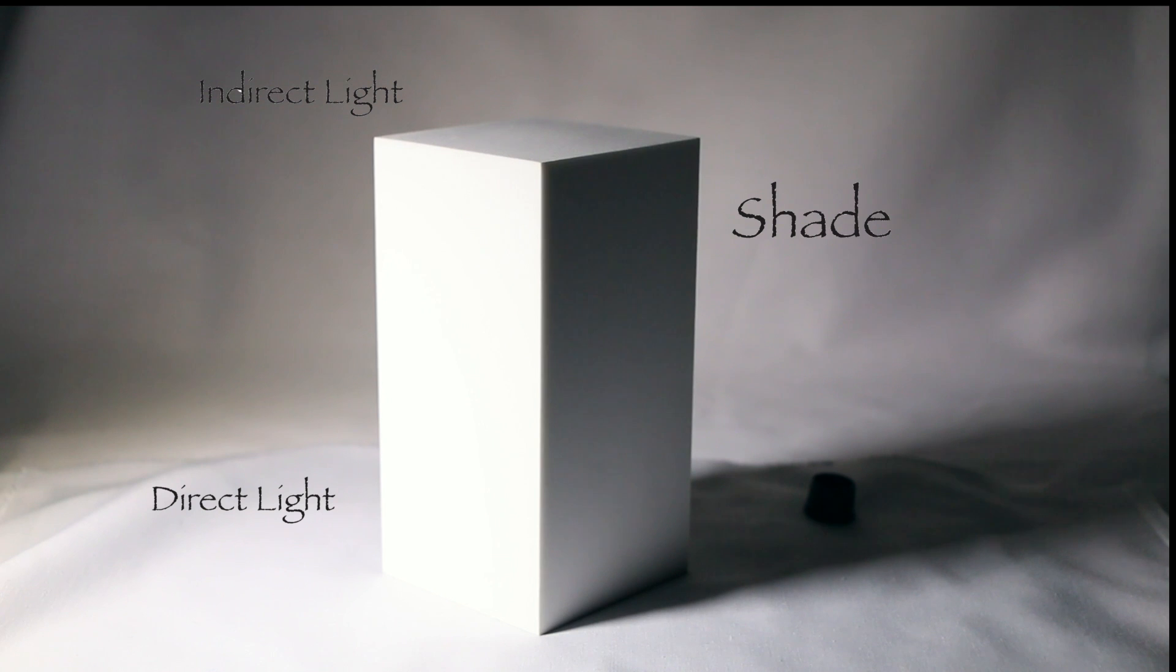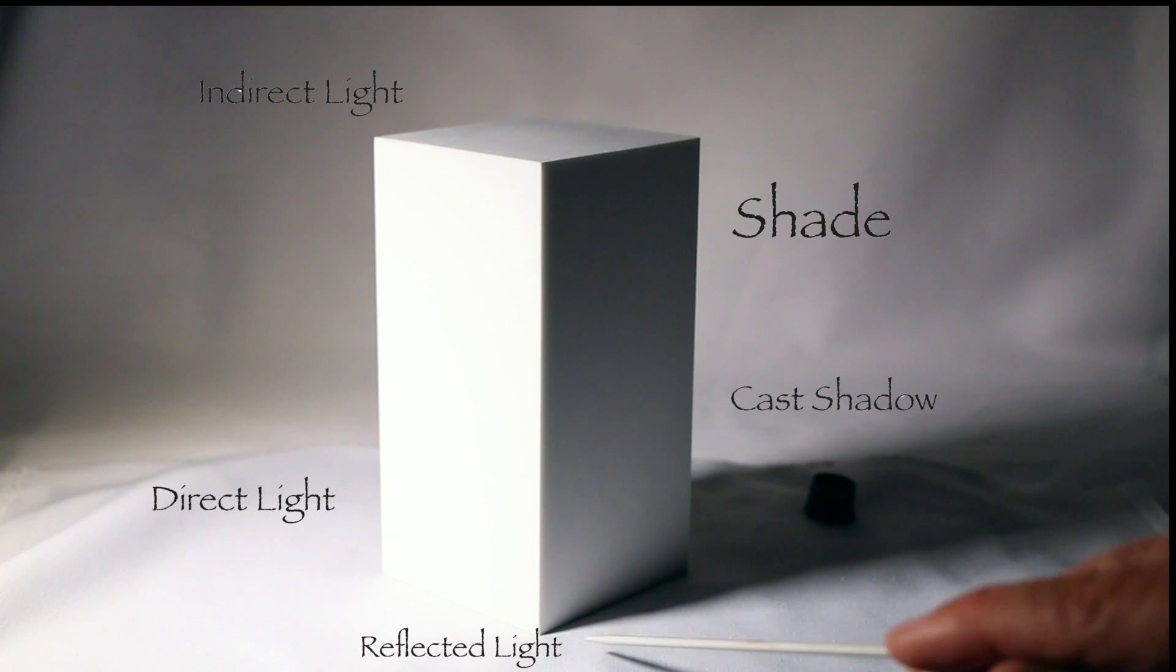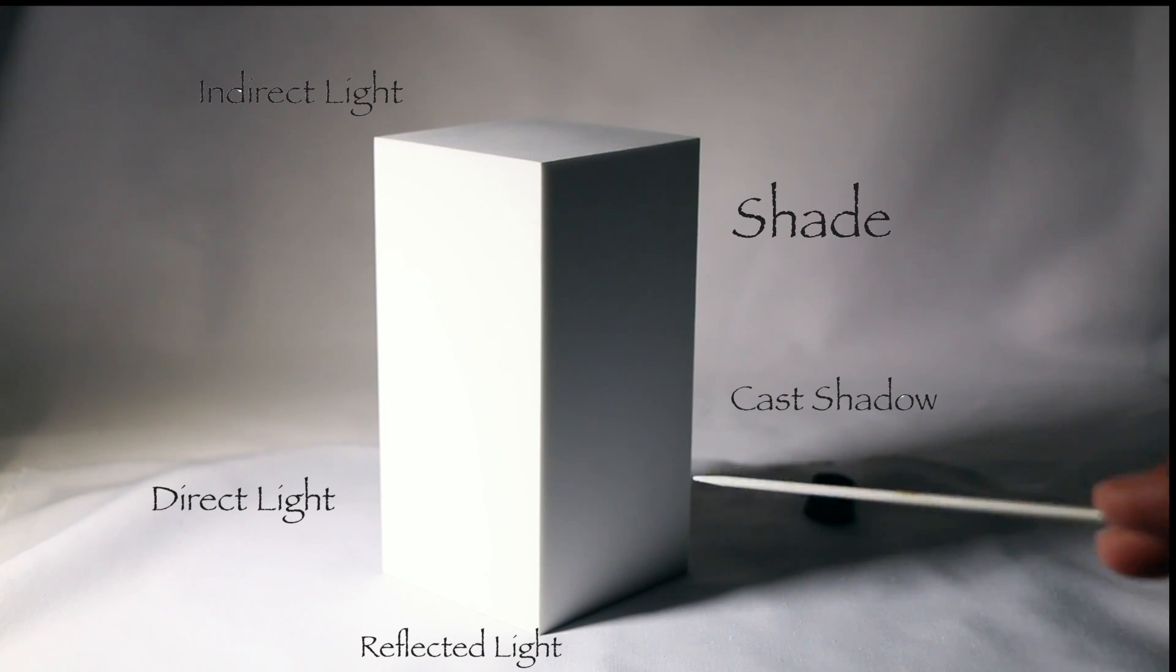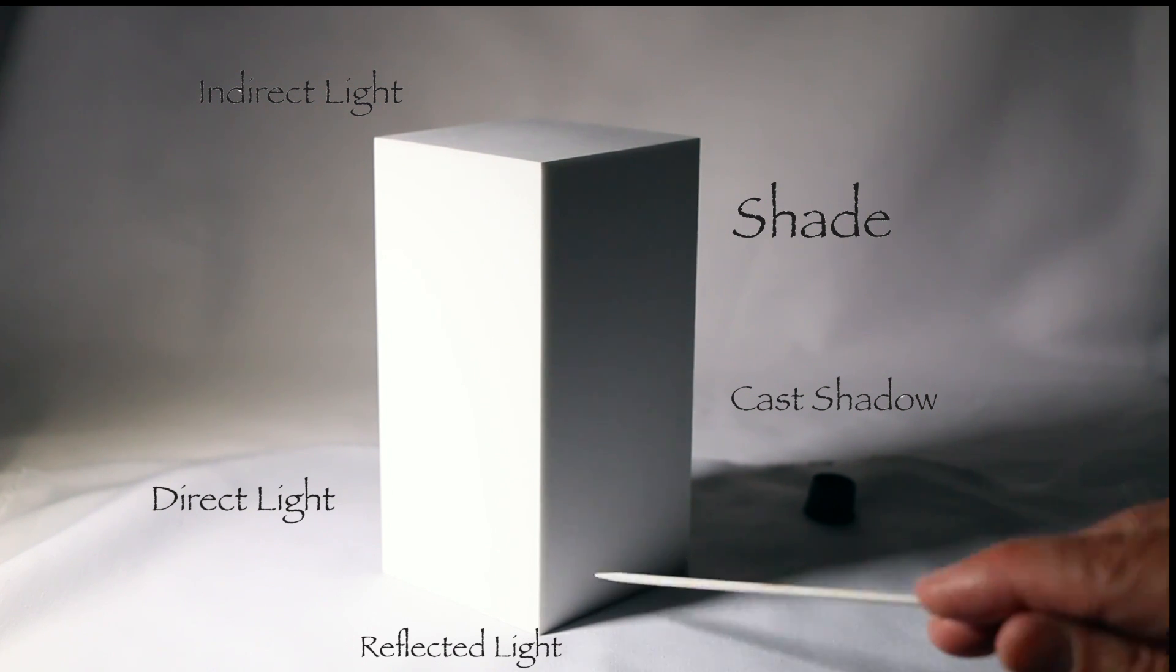On the right side plane is the shade area of the object and we have reflected light that bounces from the ground back up into the shade side. Next the object is in the way of the light source creating a cast shadow. Notice that the shade side is darker at the top and lighter as it goes down into the reflected light area.